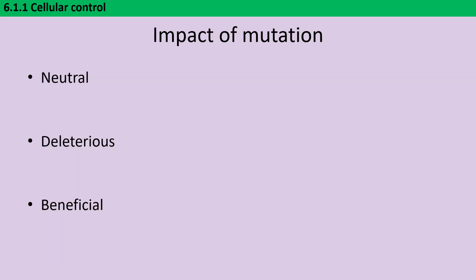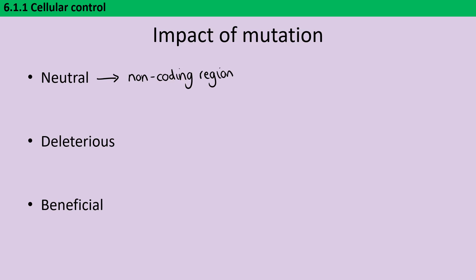Not every mutation is intrinsically a bad thing. In fact, the vast majority are selectively neutral to the organism. The first reason is that the mutation may occur somewhere that it doesn't actually affect the protein — for instance if it lies in a non-coding region, such as the introns or the large sections of chromosome in between the genes that aren't responsible for coding for the protein or controlling how much of that protein is made.